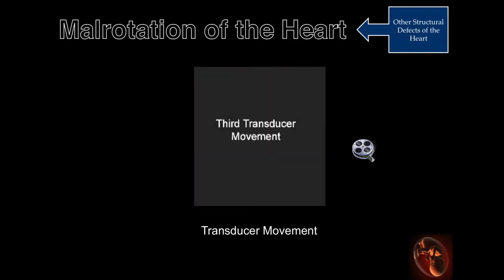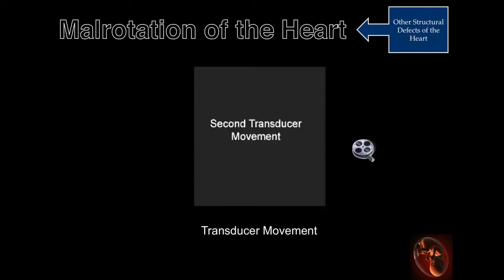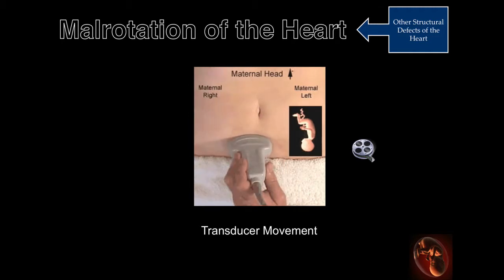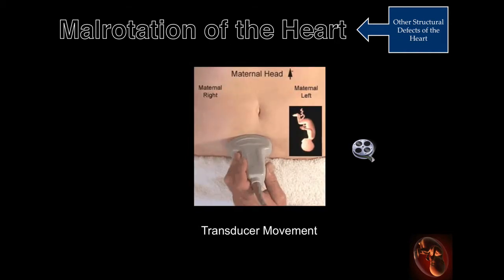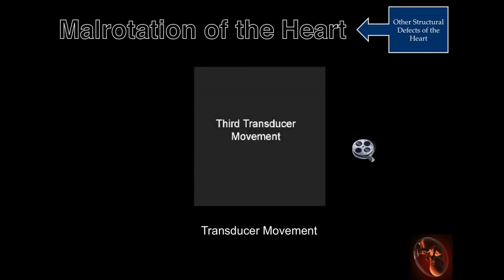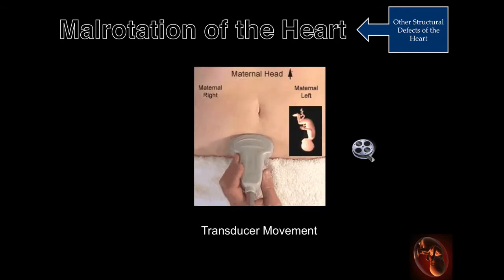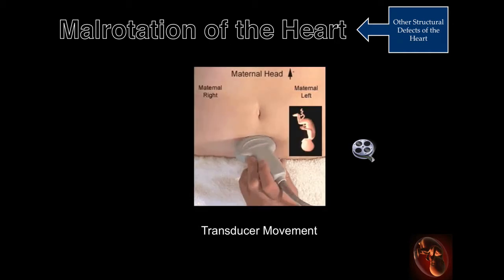One of the more difficult challenges is the identification of correct situs in the fetus. The next two slides will illustrate one technique for accomplishing this task. This clip illustrates movement of the transducer when the fetus is in the vertex position. The examiner is facing the monitor; the examiner's right is facing the left side of the monitor, and the examiner's left is facing the right side of the monitor. The examiner is facing the head of the patient. By lifting the transducer edge off of the maternal abdomen, the examiner can confirm that the above relationships are present, as illustrated in the next slide.